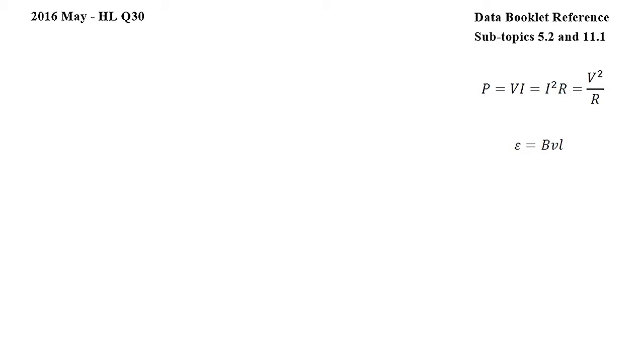Let's start by finding the induced EMF in the rod by using this equation from subtopic 11.1. Here epsilon is induced EMF, B is the magnetic field, V is the speed of the rod, and L is the length of the rod. So for the induced EMF in this question, we get epsilon is equal to B times V times capital L.